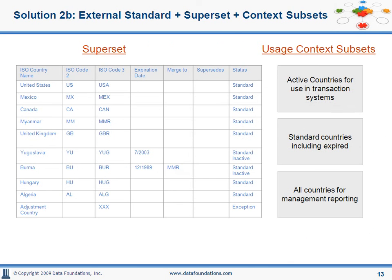We have now taken care of the adjustment country by adding 'other' or 'adjustment' to the harmonized list. But now the issue is that it is no longer the gold standard we want to follow for the organization. Here's where it is imperative that we expose views for specific usage, so the same domain appears differently based on usage context. In this particular example, we may need to create three different business usage views based on need: current, active, standard, and all.